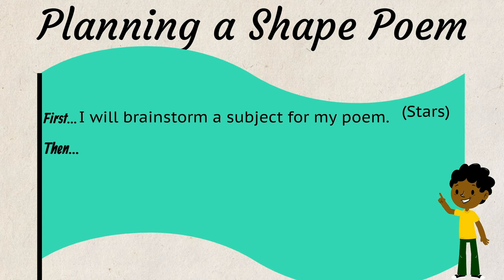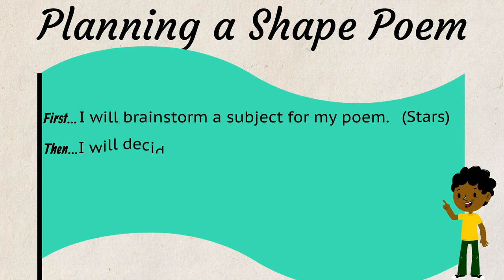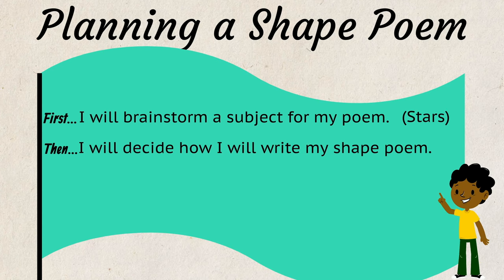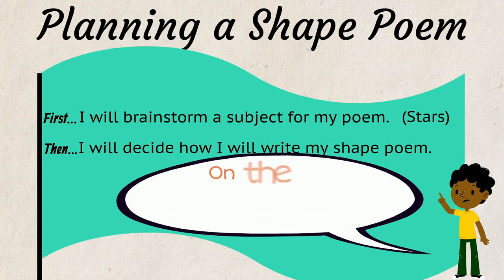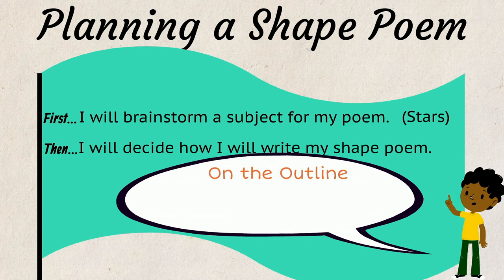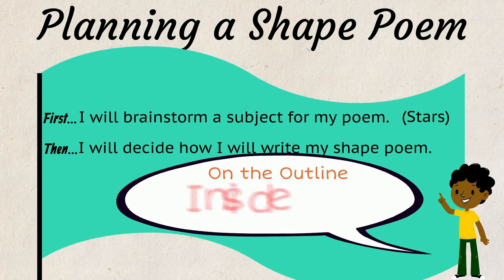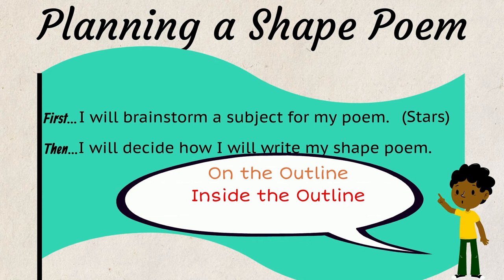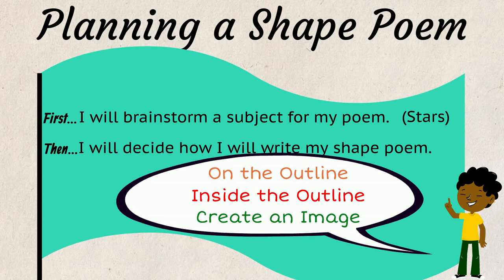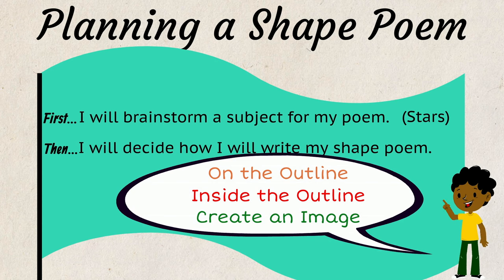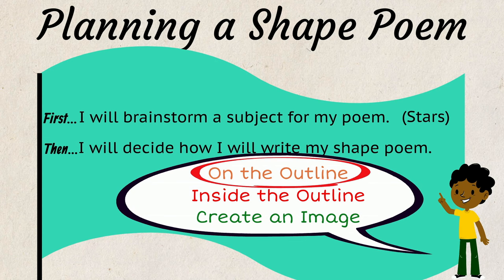Then, I will need to decide how I will write my shape poem. Will I write my poem on the outline of a star, inside the outline of a star, or will I use my words to create the image of a star? I think I will write my poem on the outline of a star.